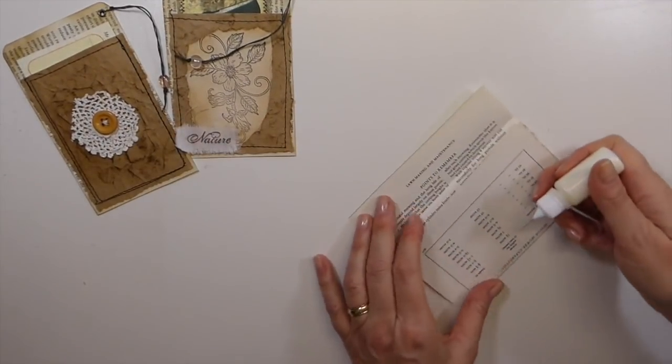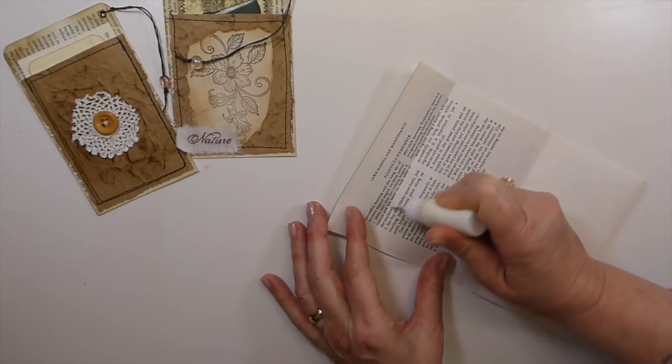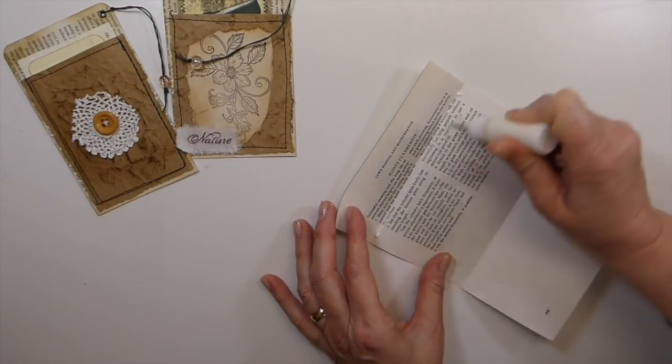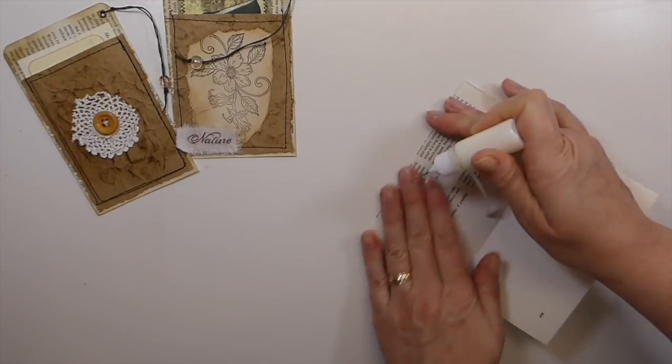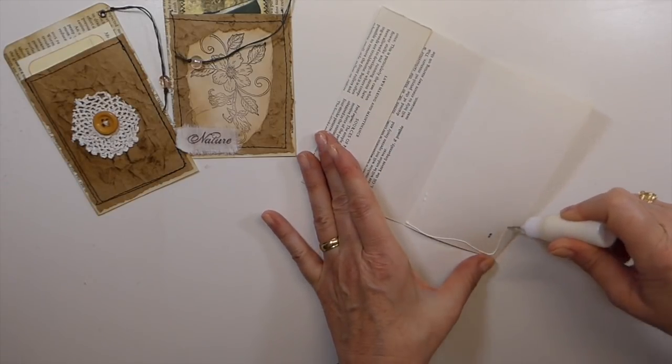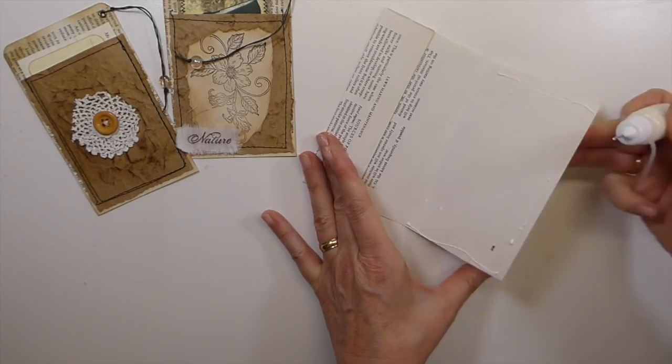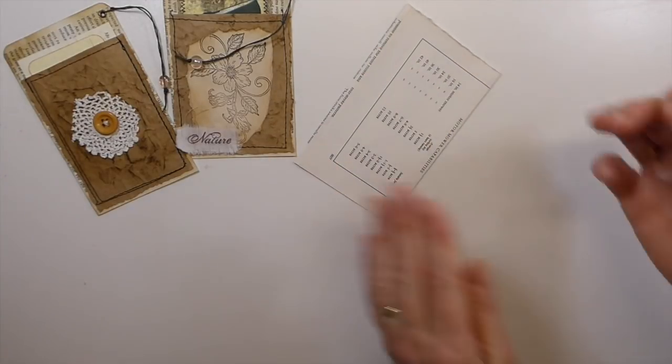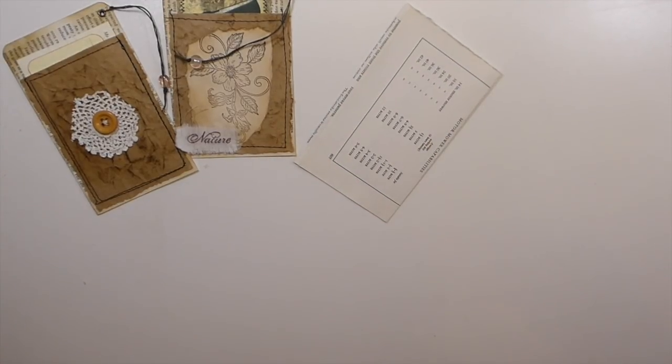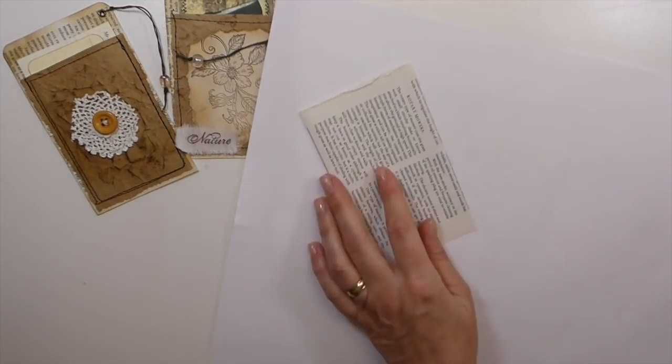So I've just folded this over because I want to make it a little bit thicker, just so that it's sturdier within the journal. Just get that glued down. You can use some glue sticks or whatever glue you want to use for it. I just happen to have that handy.